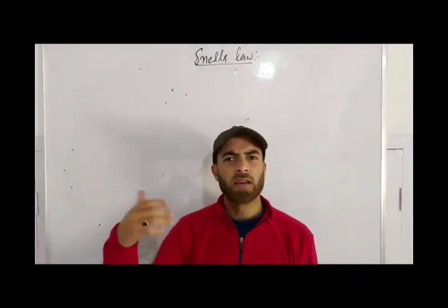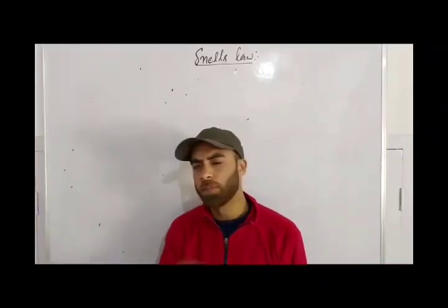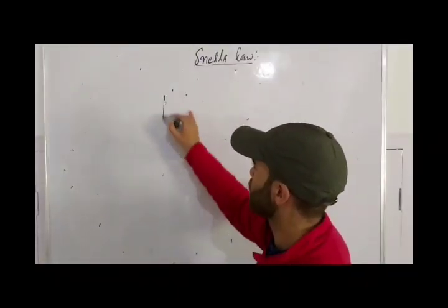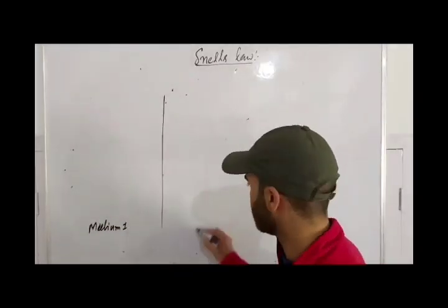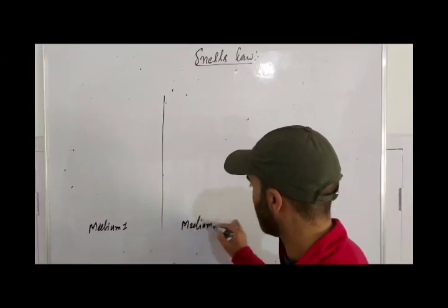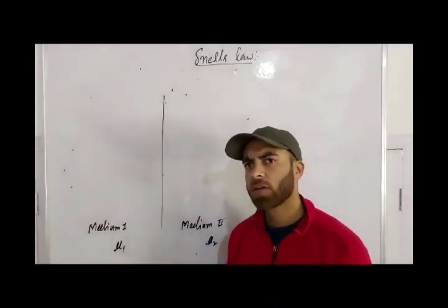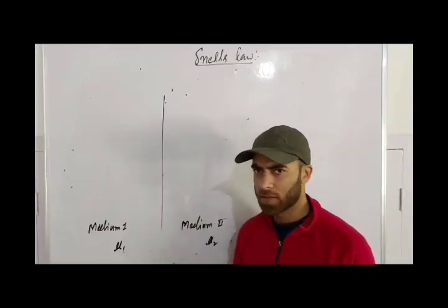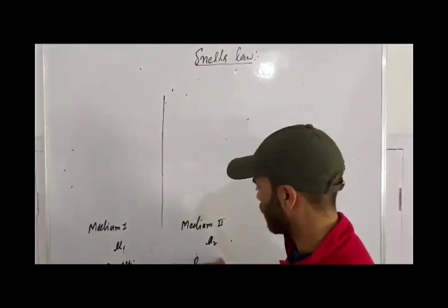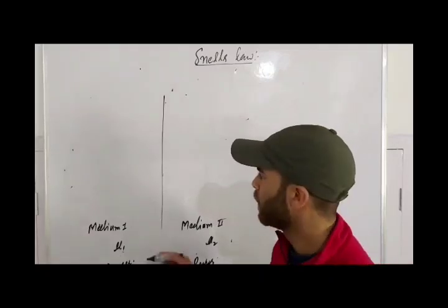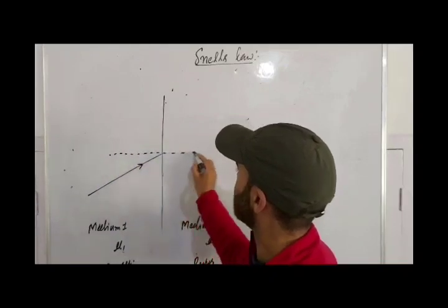If we consider the angle of incidence and angle of refraction — let us suppose this is the first medium and this is the second medium. The refractive index of each medium can be designated; one can be rarer and one can be denser. Let us suppose this is a denser medium and this is a rarer medium. Let us suppose this is an incident ray of light. We draw the normal, and this is the point of incidence.